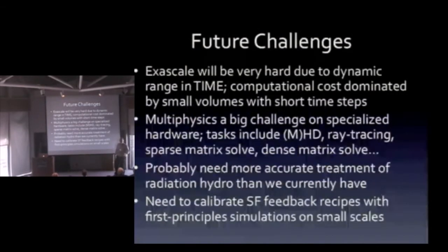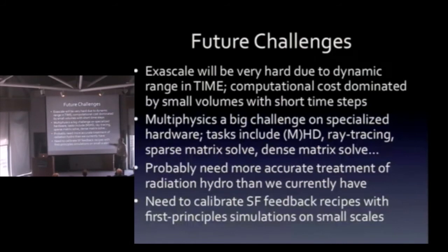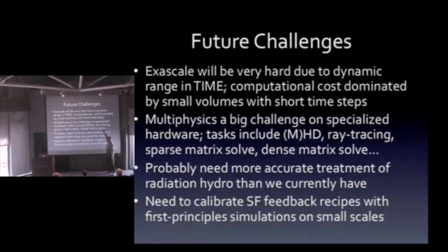Let me end with the challenges. Our biggest problem is dynamic range in time — it's inherently very hard to parallelize, requiring of order a billion time steps, with computational cost dominated by a very small volume taking a tiny time step. This is completely analogous to particle simulations where you can't use force softening because the distribution of binary periods matters. Our other big challenge, particularly for specialized hardware, is that these are inherently multi-physics problems involving many different physical models and modes of computation: hyperbolic conservation law PDEs like MHD, ray tracing for photons in the optically thin regime, and photon diffusion requiring sparse matrix inversions.